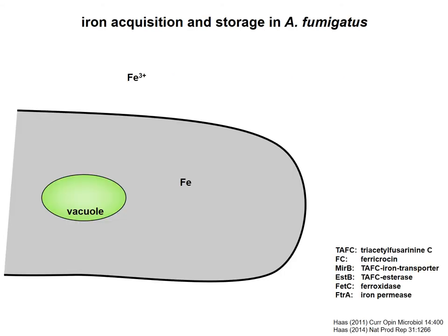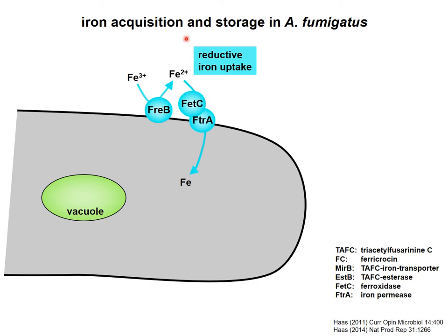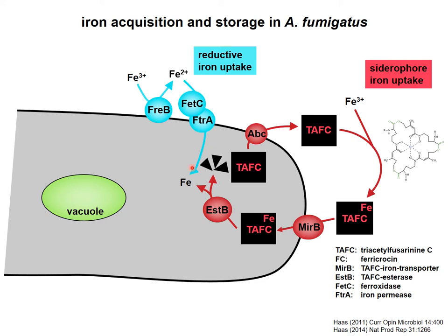Here's a summary of the fungal iron acquisition and storage mechanisms. As most fungal species, Aspergillus fumigatus employs two high-affinity iron uptake strategies. The first one is reductive iron assimilation — it starts with reduction of ferric iron to ferrous iron, which is then taken up into the cell. The second system is the siderophore system. Siderophores are low molecular mass iron-specific chelators. The major extracellular siderophore of Aspergillus fumigatus is termed triacetyl fusarinine C — we call it in short TAF-C. TAF-C is produced within the cell and excreted via specific transporters. Outside the cell, TAF-C can chelate iron with an extremely high affinity.